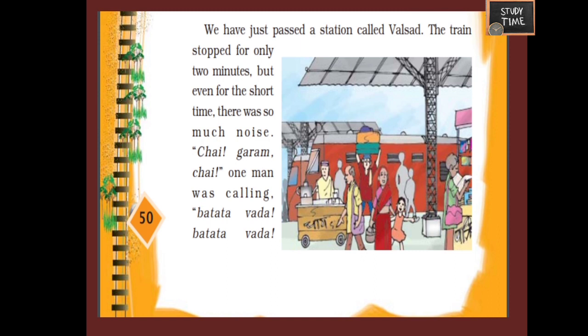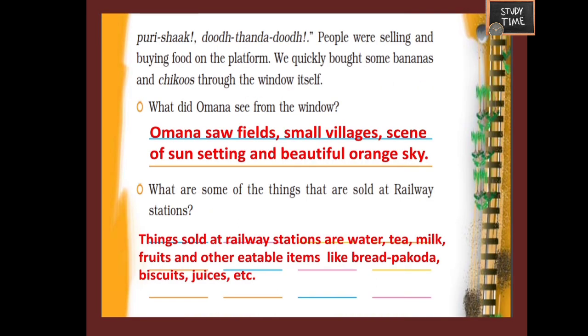They had just passed a station called Valsat. The train stopped for only two minutes, but even in that short time there was so much noise. On the platform many people were selling things — 'Chai, garam chai!' and one man was calling 'Batata vada, batata vada!' People were selling and buying food on the platform. They quickly bought some bananas and chikoos through the window itself.